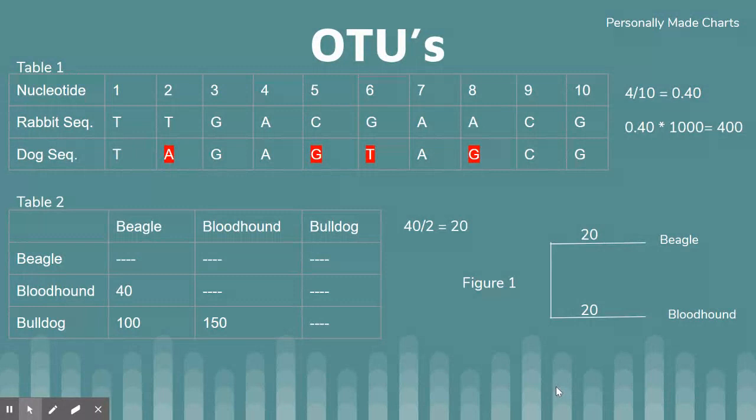In this example, there are four nucleotides that do not line up. The calculations are shown as an example. They are used to calculate the distances between the species and organisms on the tree.